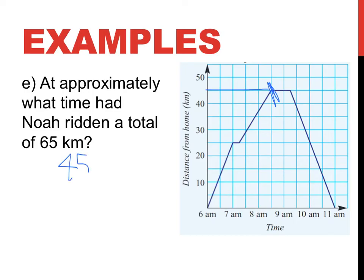He'd ridden 45 kilometers. We need him to ride another 20. We need to know where he'd been for another 20. So he's coming. This is a distance from home, so he's gone away from home. Now he's coming back.